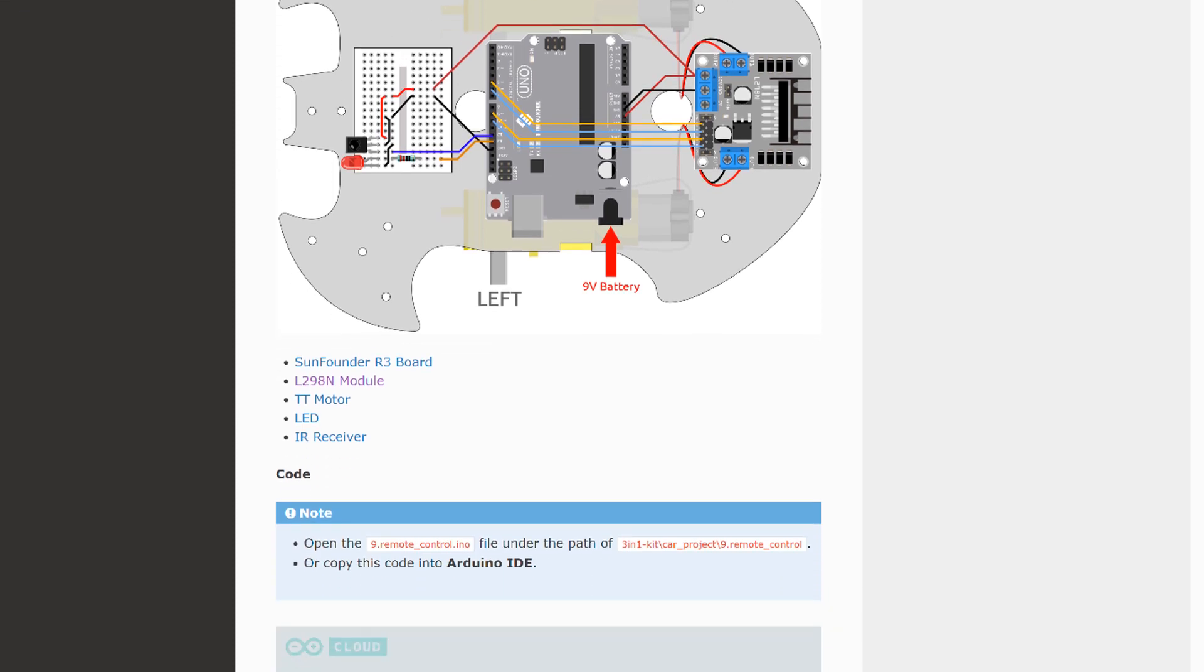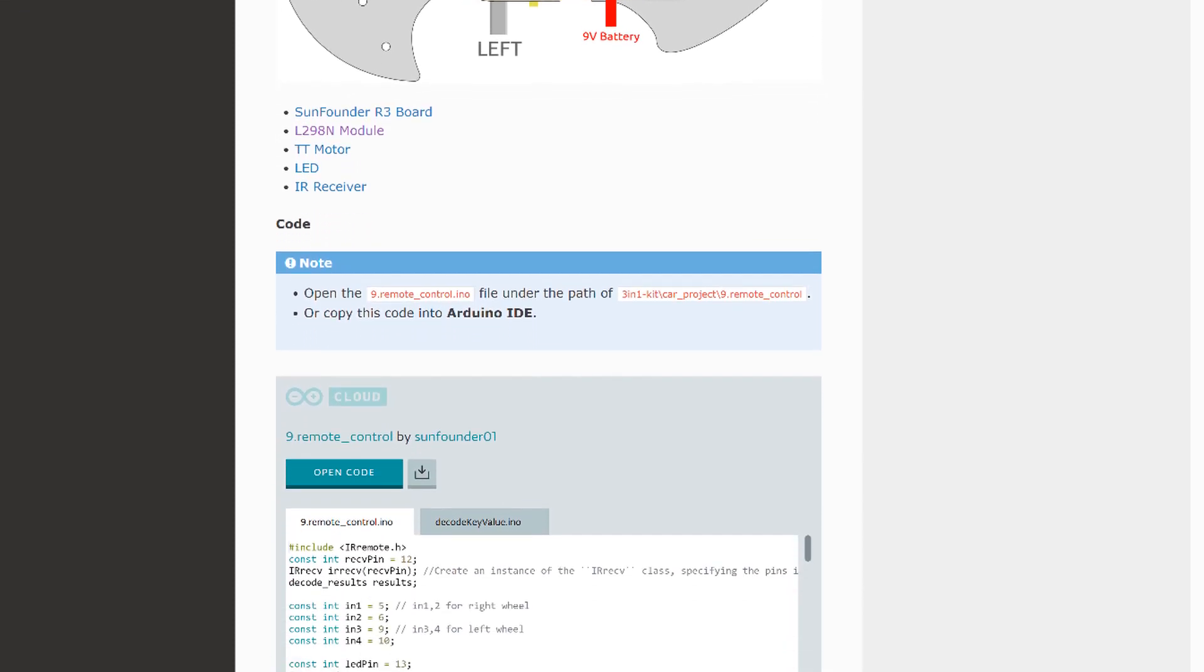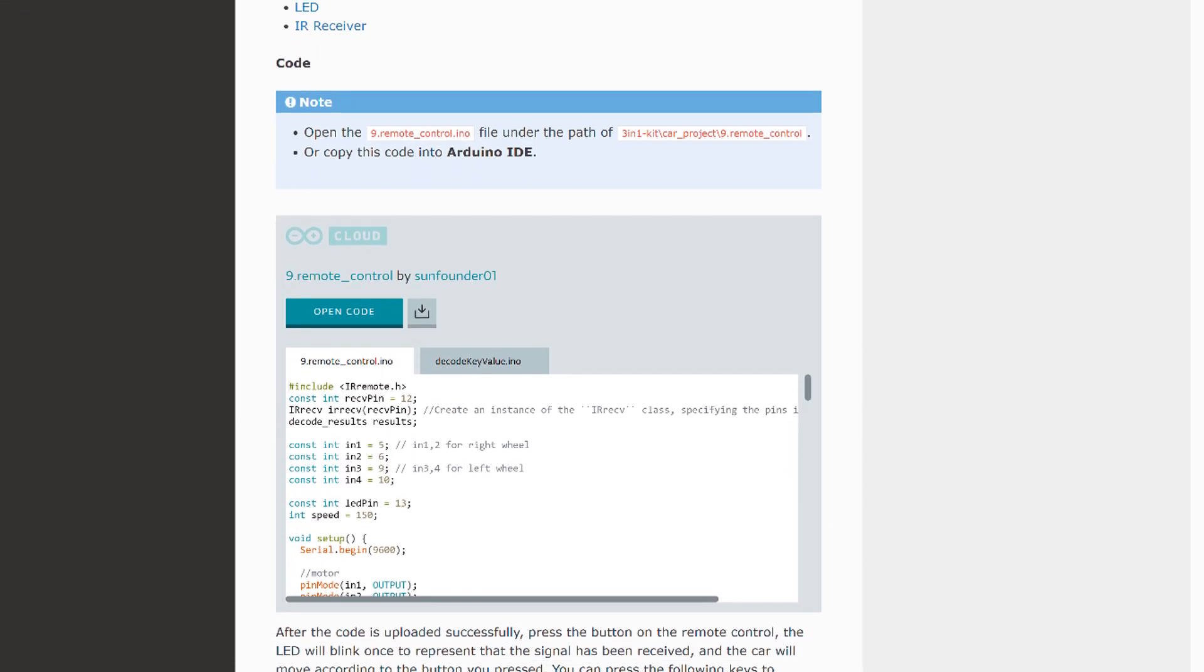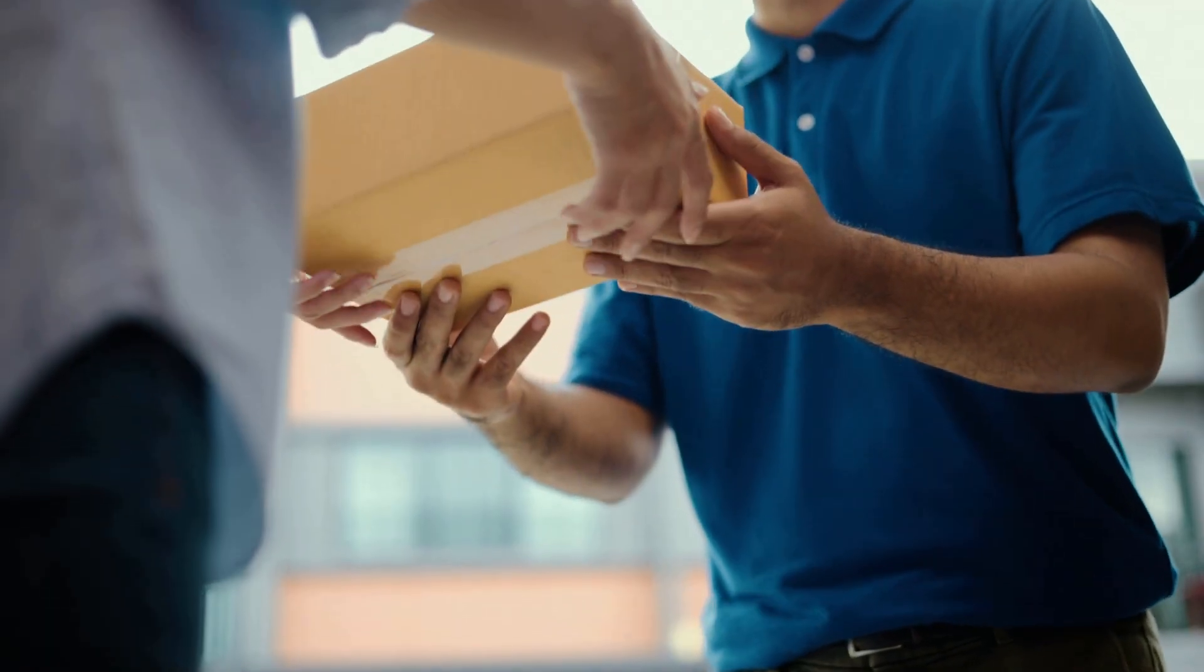Every product has an online tutorial with wiring diagrams and example code. They also offer free shipping on all orders, with no minimum. Give them a try at www.sunfounder.com next time you need to order some parts.